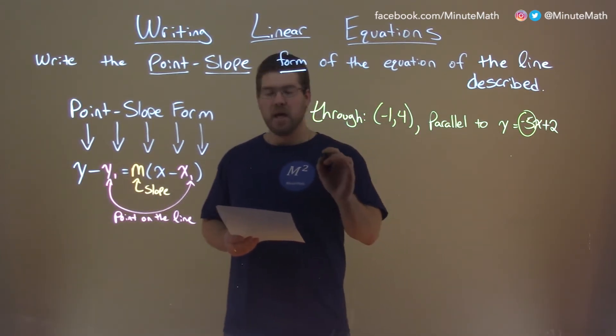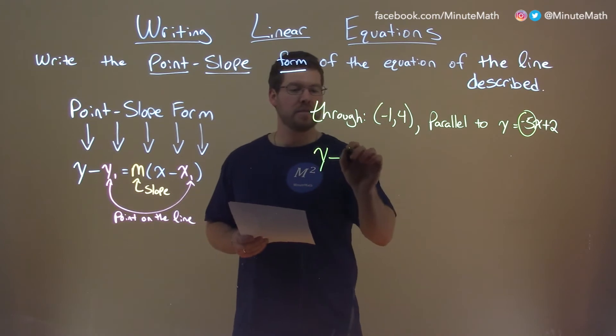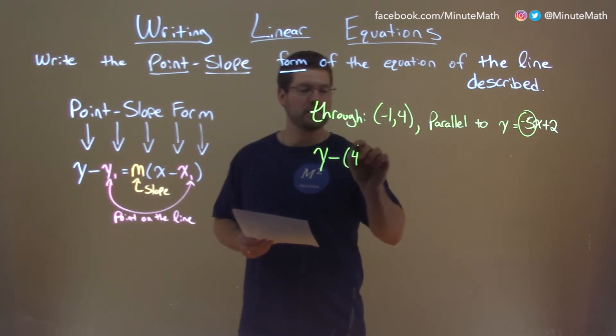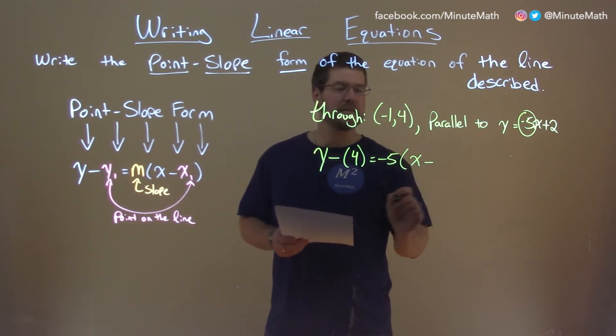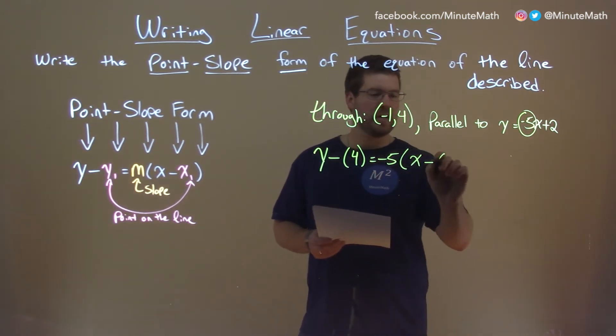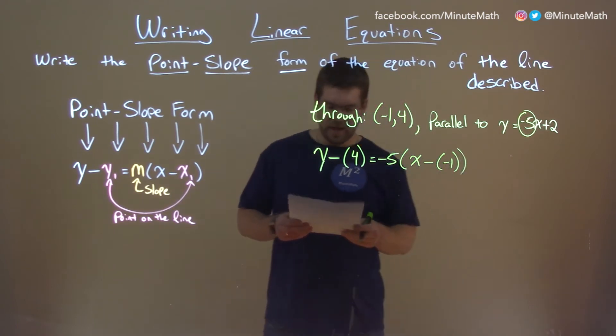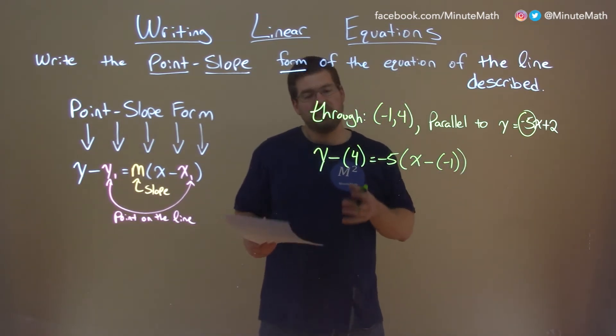We have y minus our y1, which is 4, equals slope negative 5 times x minus our x1 value, negative 1. And we now kind of have it in point slope form.